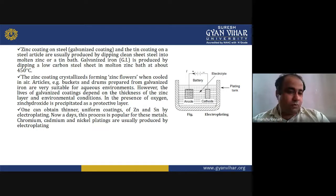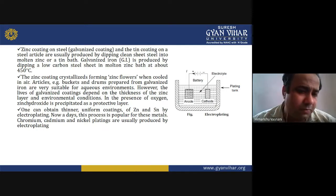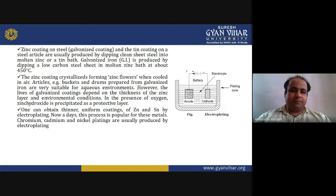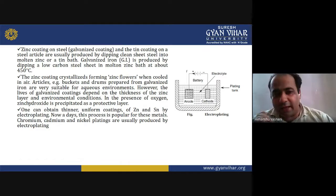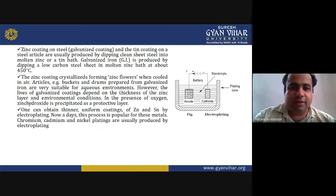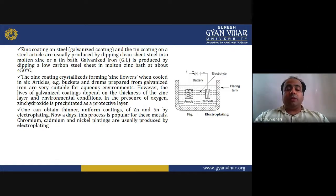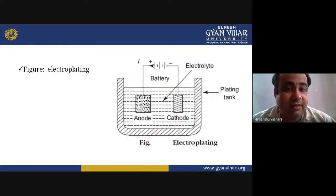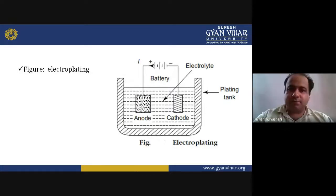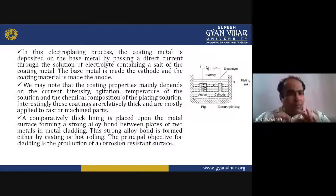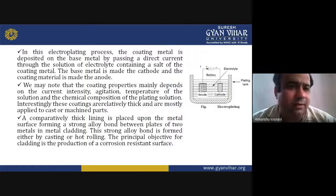Chromium, cadmium, and nickel plating are usually produced by electroplating. One can obtain thinner, uniform coatings of zinc and tin by electroplating. The electroplating process is shown in the diagram with an anode, cathode, plating tank, electrolyte, and battery providing positive and negative terminals.